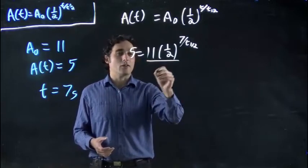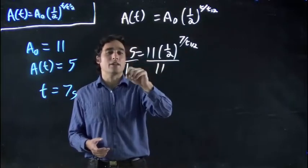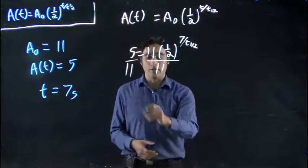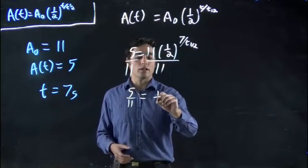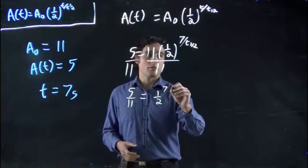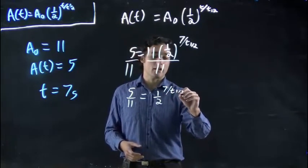As always, I do the opposite. Right now, we're being multiplied by 11, so I divide by 11. So on the left-hand side, I'm just left with 5 over 11. And that's equal to 1/2 all to the power of 7 over t₁/₂.